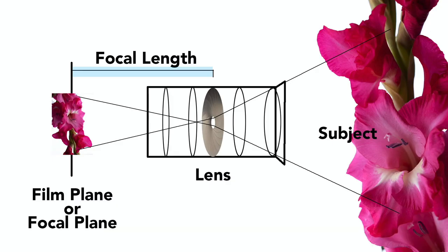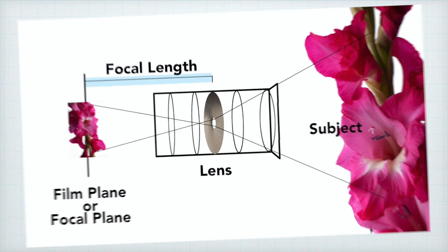What is focal length? Focal length is the distance between the optical center or rear nodal point of the lens and the film plane when focused at infinity. In terms of lenses, infinity is the distance from which light enters the lens in parallel rays. Focal length is fixed and determined in manufacturing. You cannot change it — discounting zoom lenses — but you can use accessories to alter the focal length.